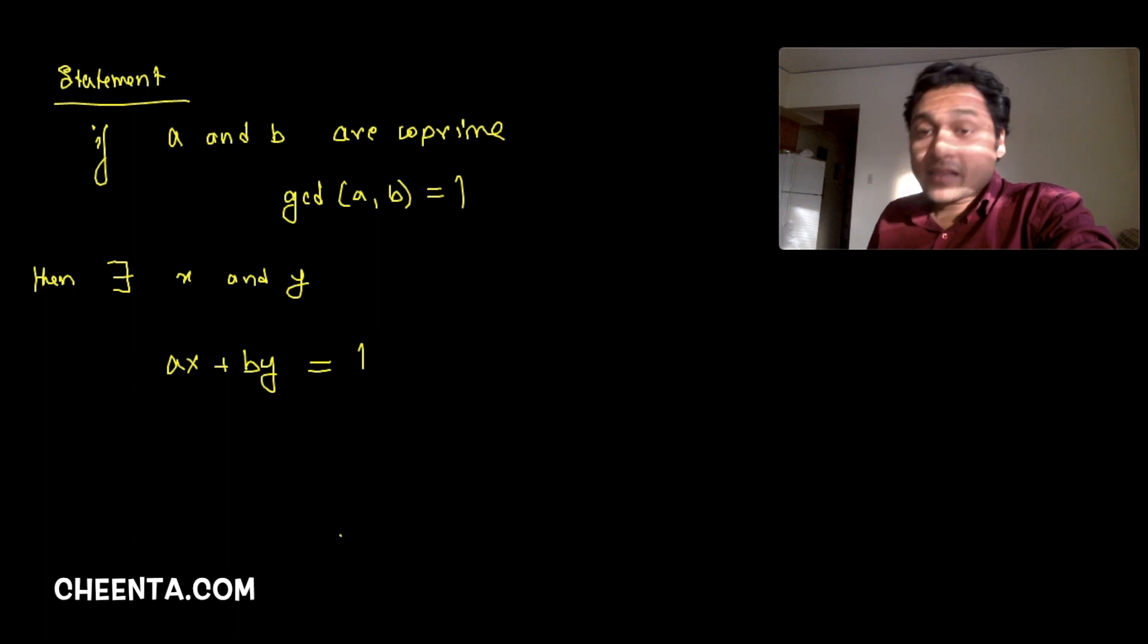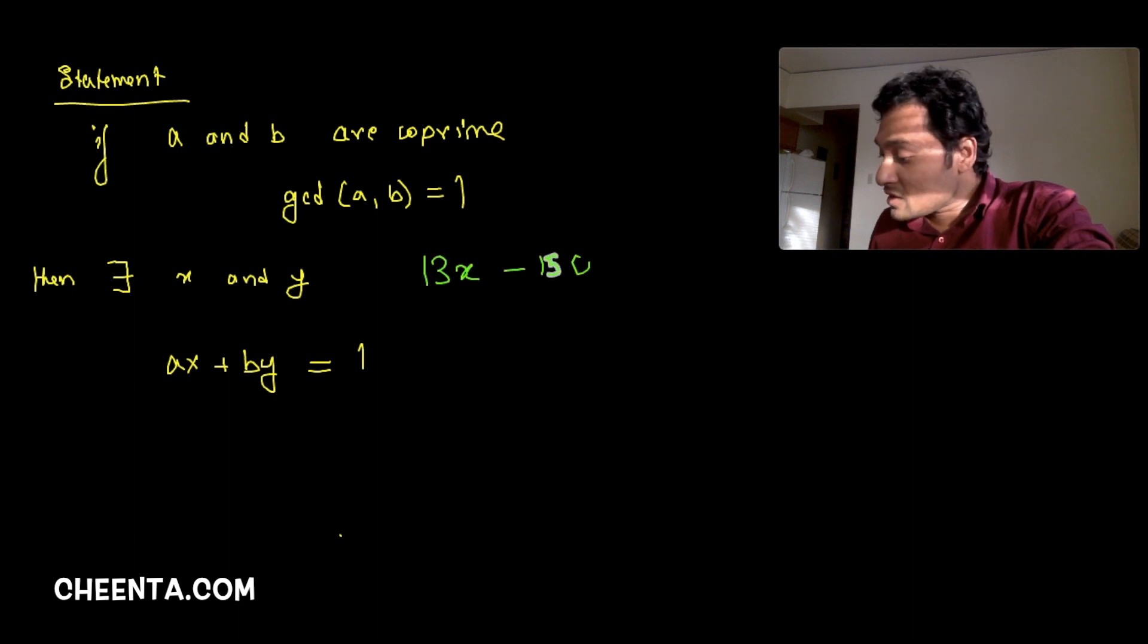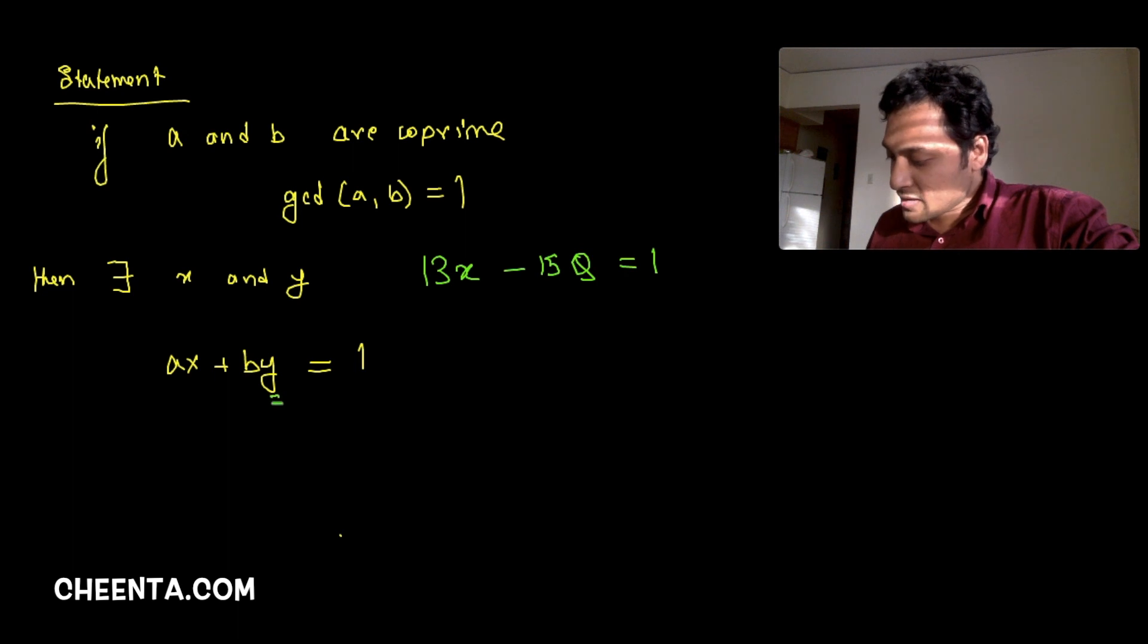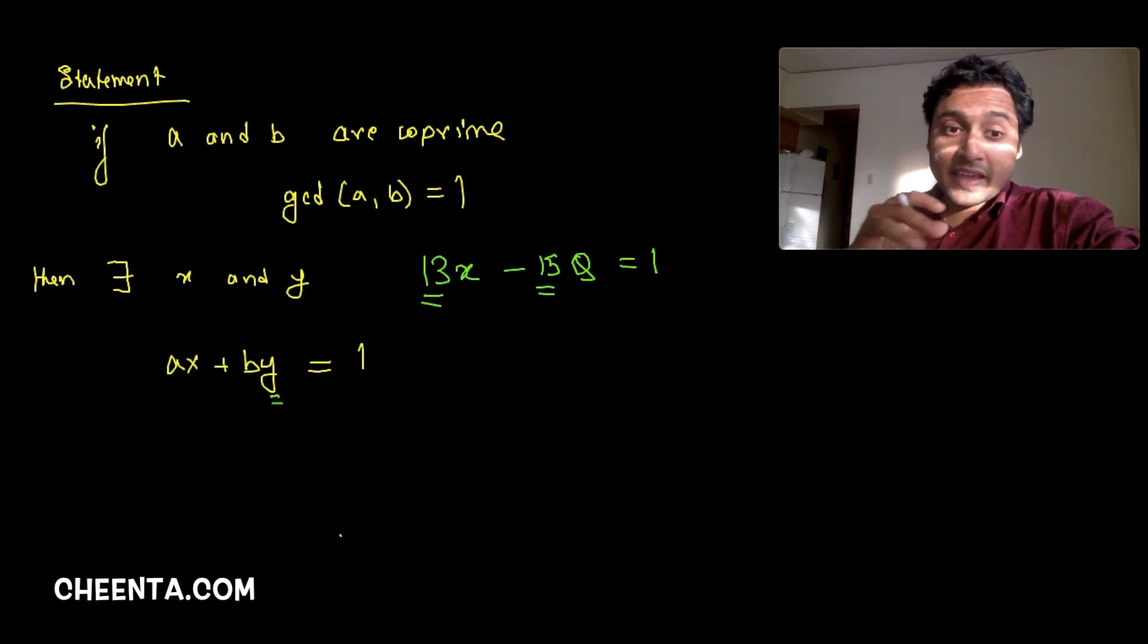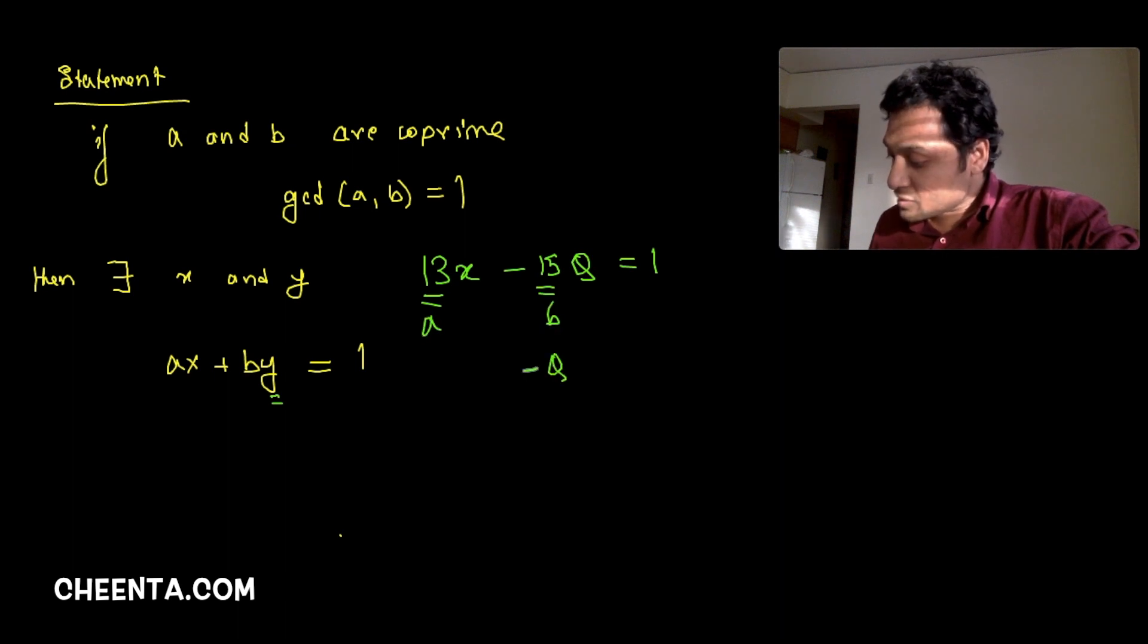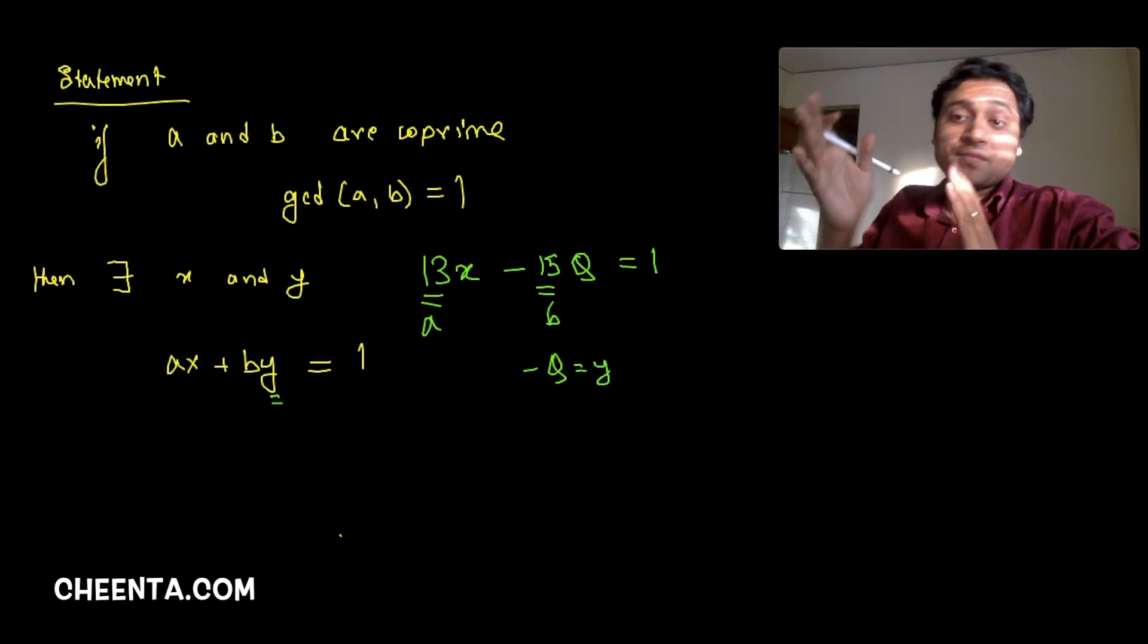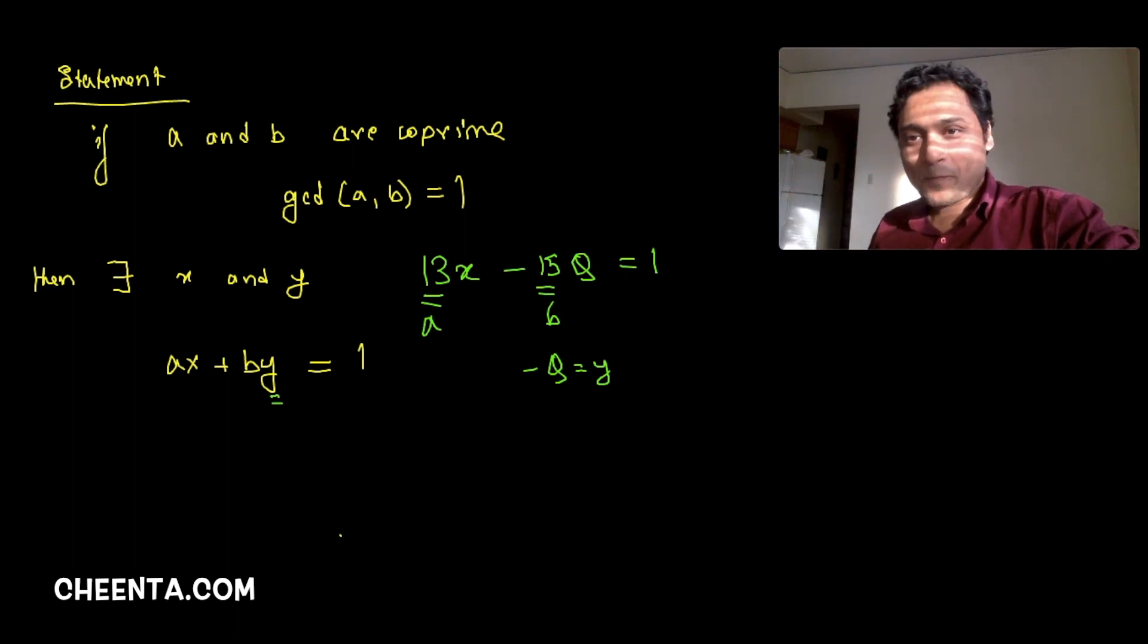Why? Because remember in the previous board we talked about this: we wanted 13x minus 15q to be equal to one, right? This is a common scenario. This is exactly what we need. So if I think about negative q as y, 13 and 15 are my a and b. We exactly have this scenario that a and b have GCD 1, which is 13 and 15 have GCD 1. We want to find out x and negative q, or x and y, such that ax plus by is equal to one. And if we can do that, we can say x is the inverse of a. So that's how this particular statement directly gives you the inverse of a. Obviously your reference number is b, or in this case 15.